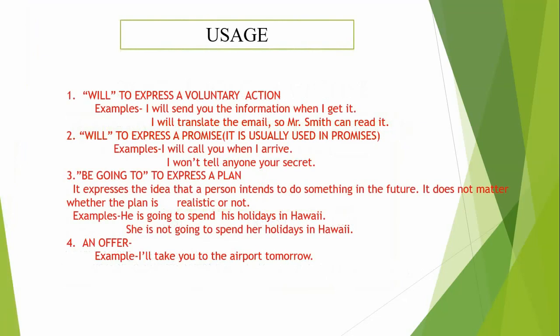Now let's learn some usages of simple future tense. Will and going to are used in this case. Will is used to express a voluntary action. Example: 'I'll send you the information when I get it.' 'I will translate the email so Mr. Smith can read it.' Will is also used to express a promise — it is usually used in promises. Example: 'I will call you when I arrive.'